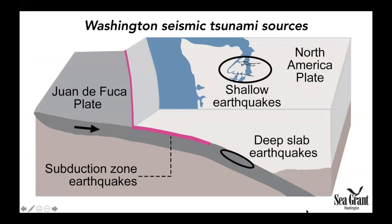Now I'm going to talk about the seismic sources for tsunamis in Washington. In this picture we are looking at a cross-section through Washington to show all three sources of potential tsunamis. We've got subduction zone earthquakes, shallow earthquakes on faults in the North America plate, and also earthquakes that form deep underground in the subducting Juan de Fuca plate. I'll talk about each one of these in some detail.